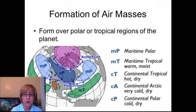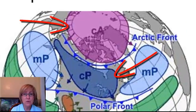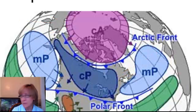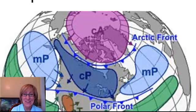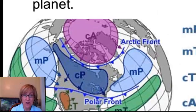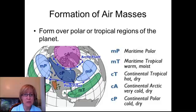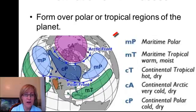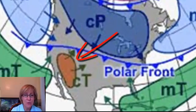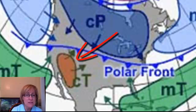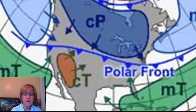We also have continental arctic and continental polar air masses. The continental arctic forms over the North Pole and is very cold and very dry. The continental polar air masses are formed over northern Canada and are also cold and dry. The last one is CT, the continental tropical, which is hot and dry. You can see that out in the west over the Rocky Mountains, Denver, New Mexico — those areas.